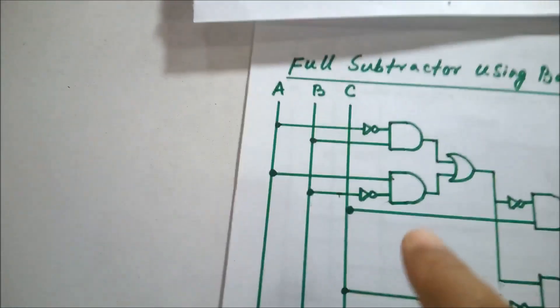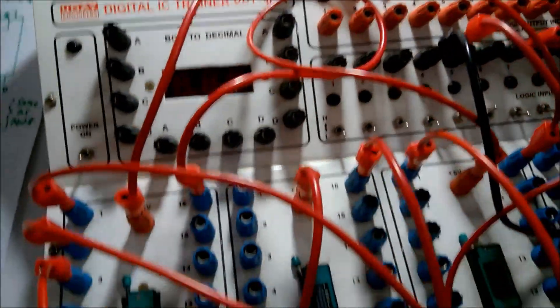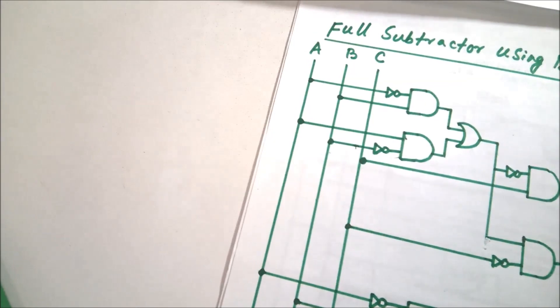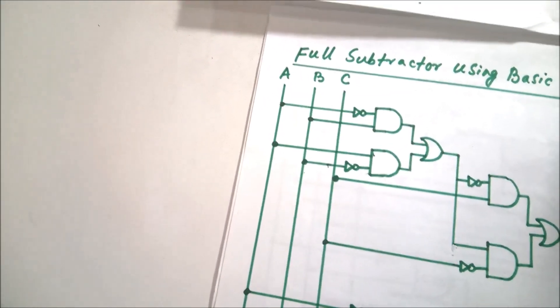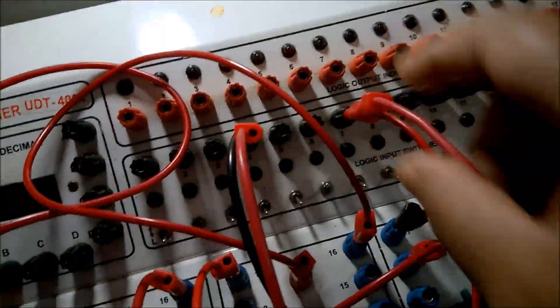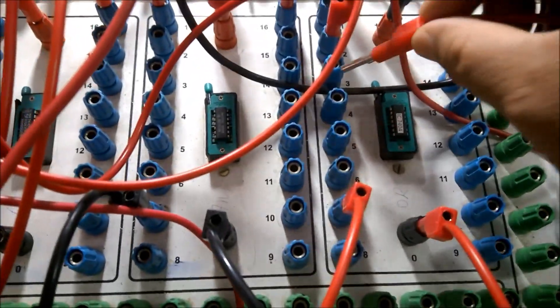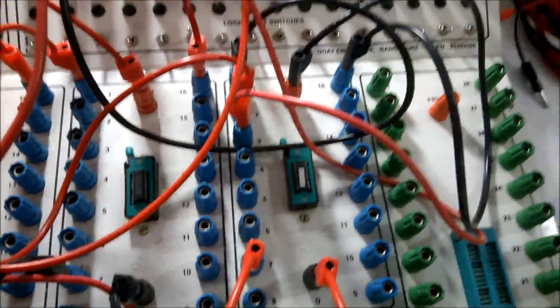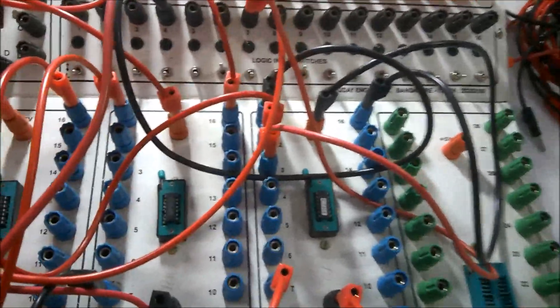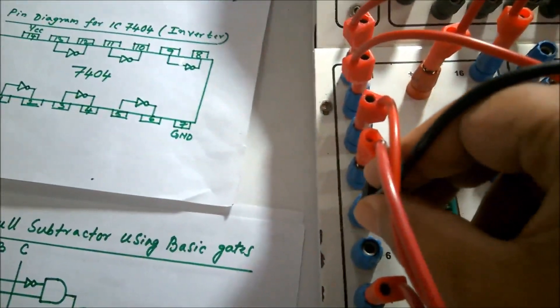Now coming to the second AND gate: from A again, it is going to the input of the second AND gate — pins 4 and 5 are the inputs. I am connecting pin 4. B has to be complemented, so I am connecting B through a NOT gate; input is pin 3 and output is pin 4 of the NOT gate. That output is coming to the input of the second AND gate, and the output at pin 6 is going to the OR gate.